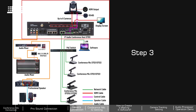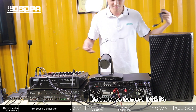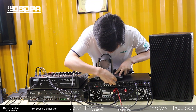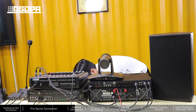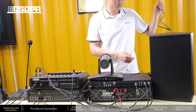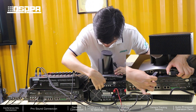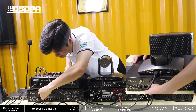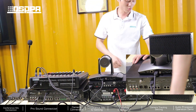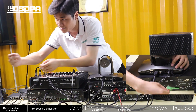Step 3: Camera Connection. Connect the Comfort Camera D6284 with a power line. The camera connects to the host using an HDMI cable, and the next connection uses a control cable.